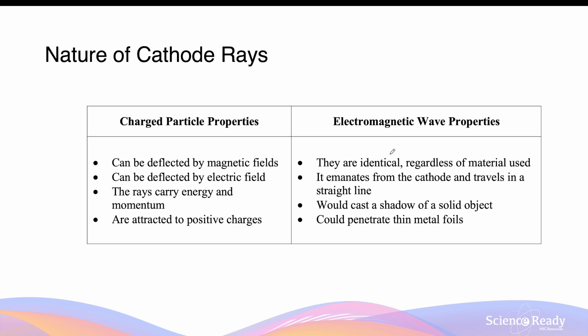The Maltese cross experiment shows the wave nature of cathode rays. This experiment shows that cathode rays travels in a straight line, just like light. It can also cast a shadow directly behind the Maltese cross, another property that light possesses. It was also shown in other experiments that cathode rays can penetrate thin metal foils, which is consistent with the behaviour of waves.